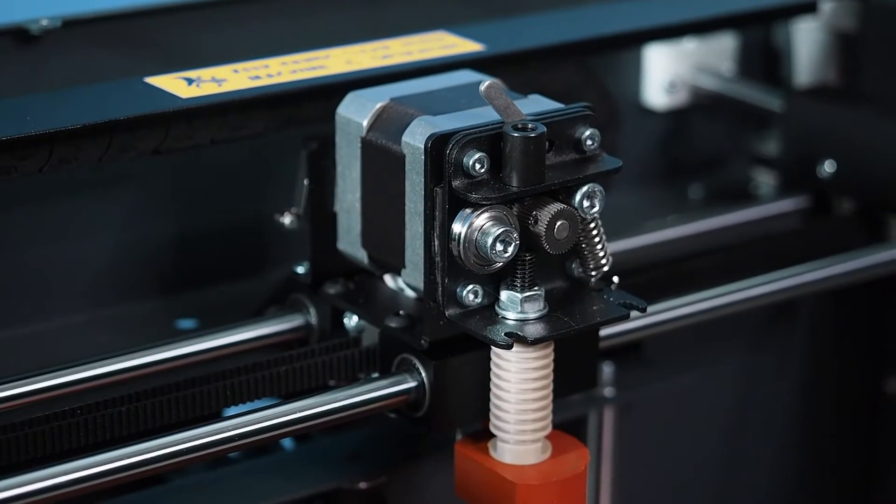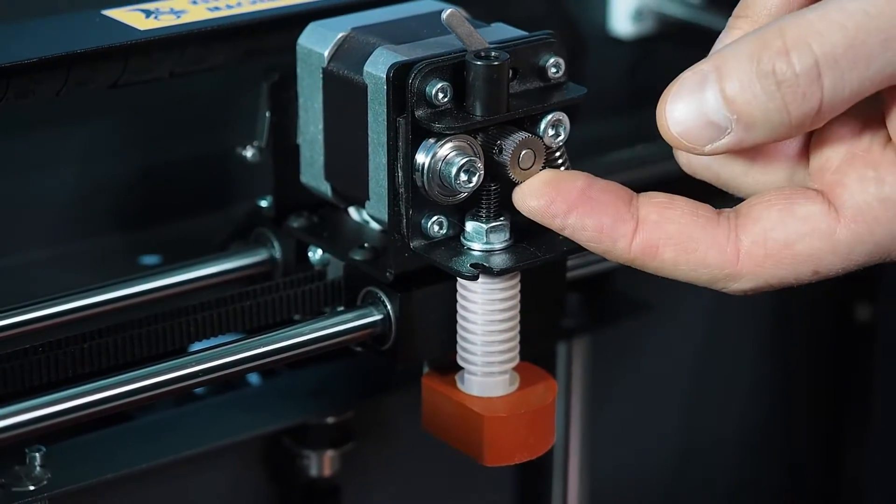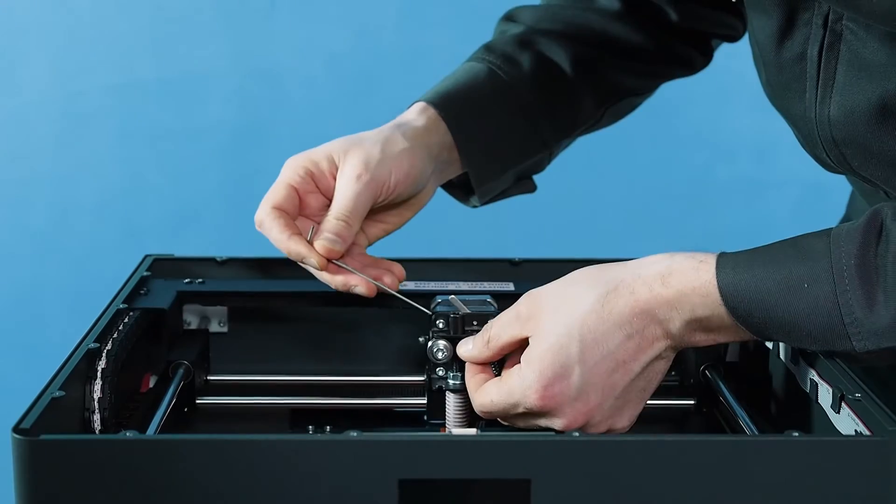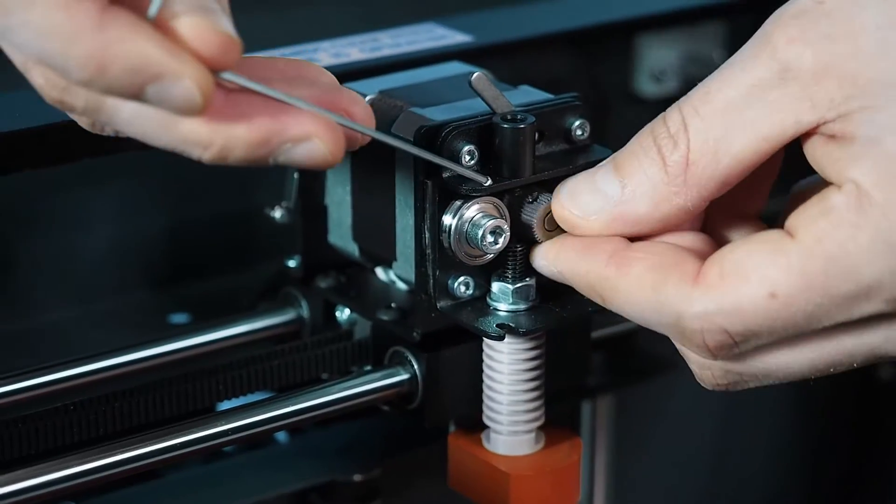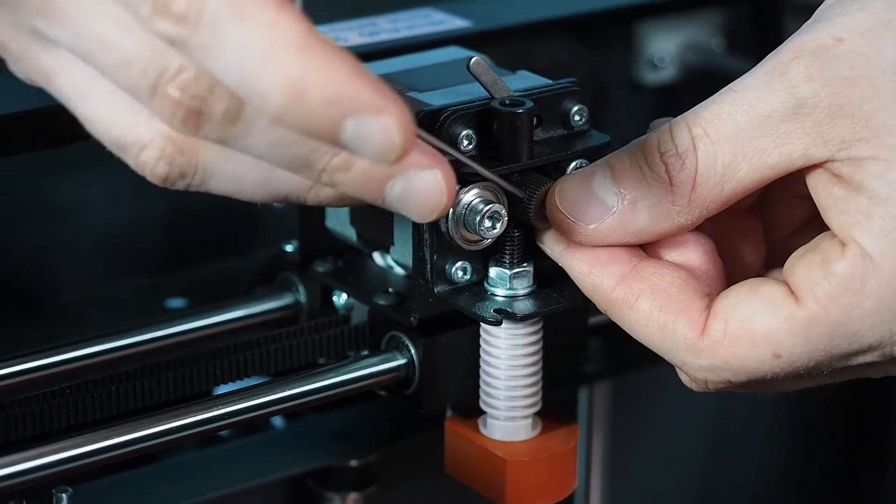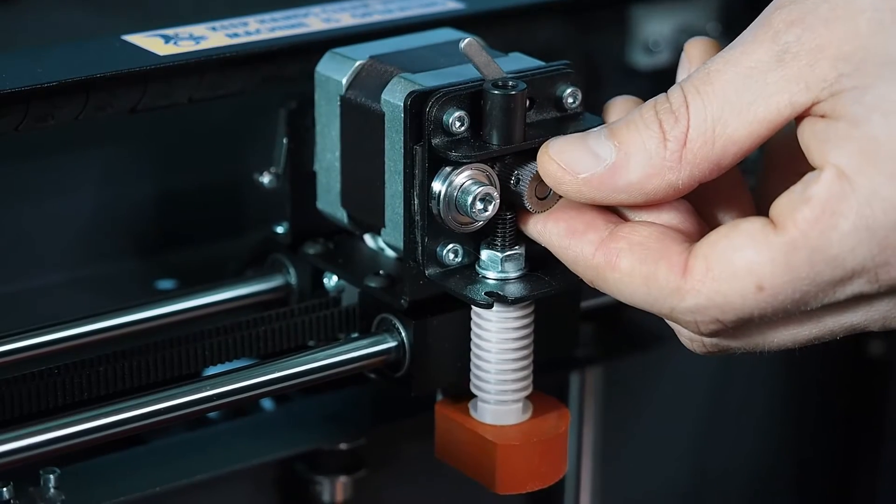Now that we have the fan assembly off, we're going to take this little gear out to get better access. You're going to use your smallest Allen wrench. There's a little set screw on the side. You're going to put the Allen wrench in there and pop that right off. You're not going to take the set screw out, but just loosen it up and it'll slide right off.